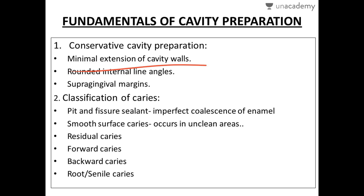Regarding internal line angles: the internal line angle should always be rounded in cases of amalgam restoration. In cases of cast gold restoration, we can consider beveling or giving an angle to the restoration, but most of the time internal line angles are always rounded.